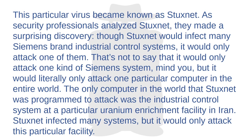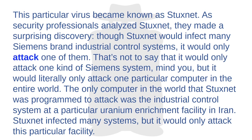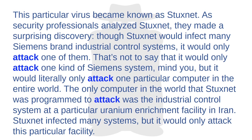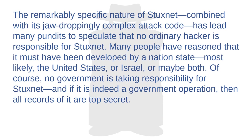As security professionals analyzed Stuxnet, they made a surprising discovery. Though Stuxnet would infect many Siemens-brand industrial control systems, it would only attack one of them — literally only one particular computer in the entire world. The only computer Stuxnet was programmed to attack was the industrial control system at a particular uranium enrichment facility in Iran. Stuxnet infected many systems but would only attack this particular facility. The remarkably specific nature of Stuxnet, combined with its jaw-droppingly complex attack code, led many pundits to speculate that no ordinary hacker was responsible.